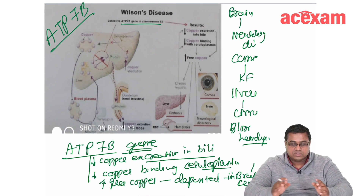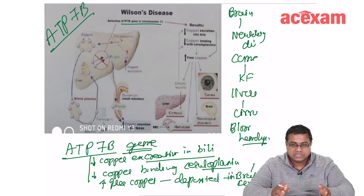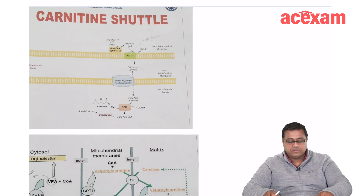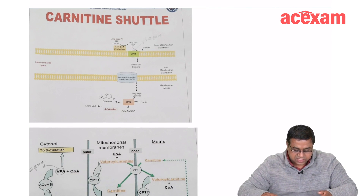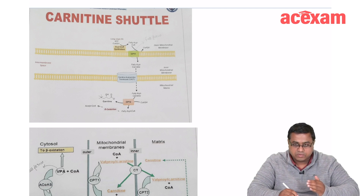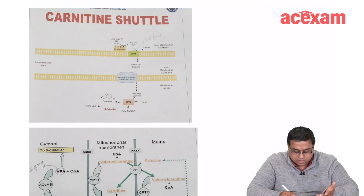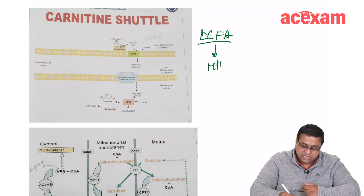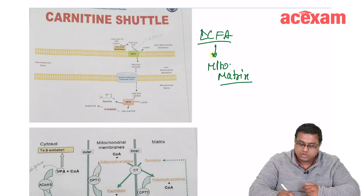In the next class, we will discuss lipoproteinemia, hyperlipidemia, Tangier disease, beta-oxidation, and inborn errors associated with lipids and organic acids. We will also discuss carnitine — specifically the carnitine shuttle — which is used for transporting long-chain fatty acids into the mitochondrial matrix for beta-oxidation.